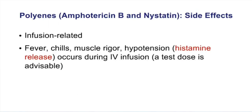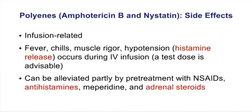There are infusion-related side effects for Amphotericin B: a patient can get fever, chills, muscle rigors, and hypotension, all caused by histamine release. Before giving Amphotericin B, you can pre-treat with antihistamines or adrenal steroids to prevent these infusion-related side effects.